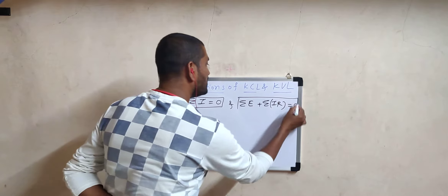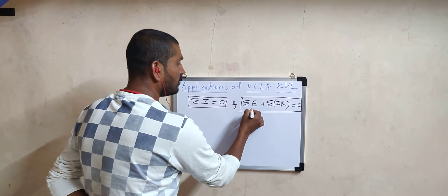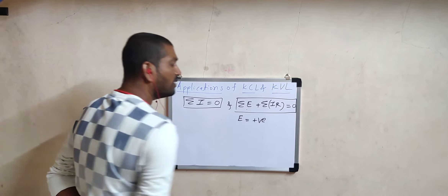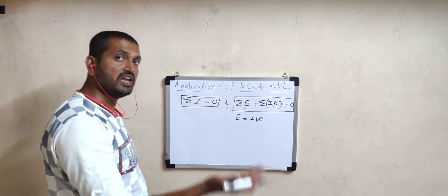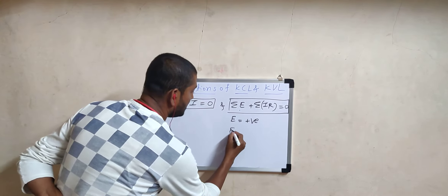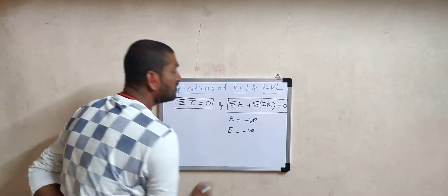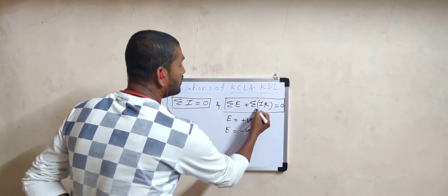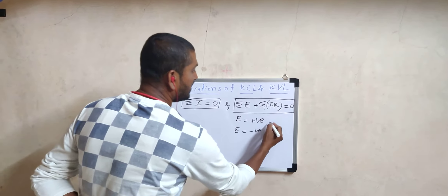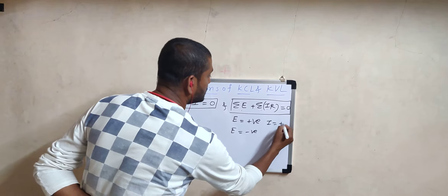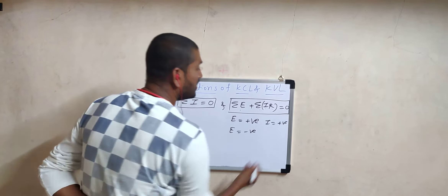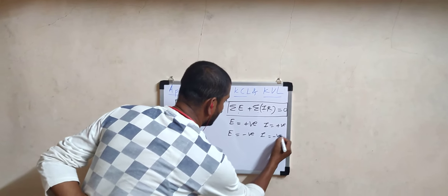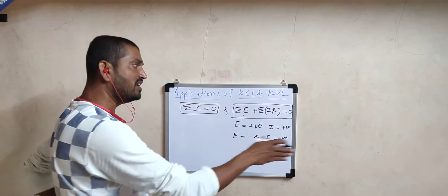To apply KVL we use two sign conventions. For EMF: the EMF of a cell is taken as positive while going through the loop from the negative side to the positive side, and taken as negative while going from the positive side to the negative side. For the IR product: current is taken as positive when it flows in the opposite direction of the loop, and negative when it flows in the direction of the loop.